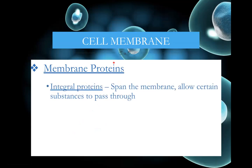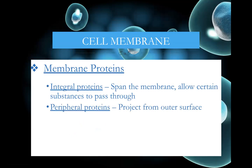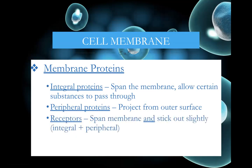Membrane proteins include integral proteins that span throughout the whole membrane from one side to the other, allowing certain substances to pass through that otherwise couldn't. Peripheral proteins project from the outer surface and might help to identify the cell or accept something like a hormone. Receptors, which are part of these peripheral proteins, stick out and accept molecules like hormones.